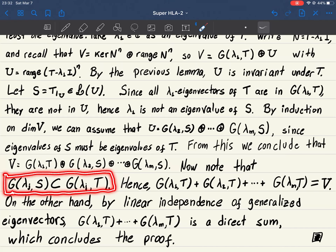The generalized eigenspace of operator S with respect to the number lambda j will be the generalized eigenspace of operator T with respect to the same number, because Ts is just a restriction of T to the smaller subspace.